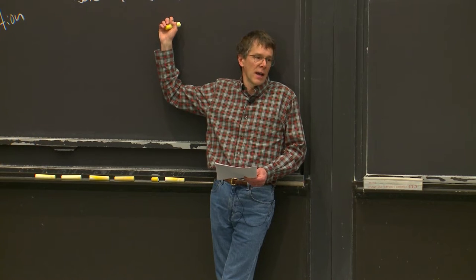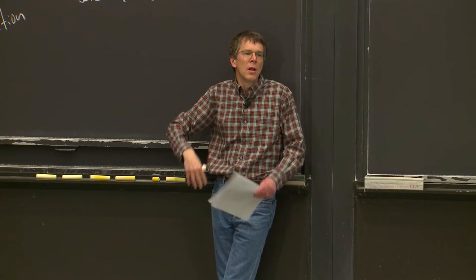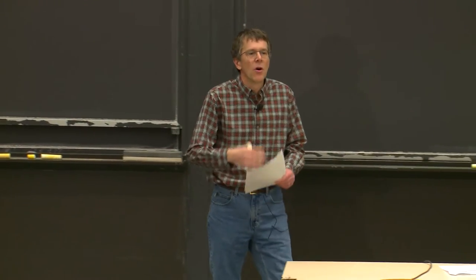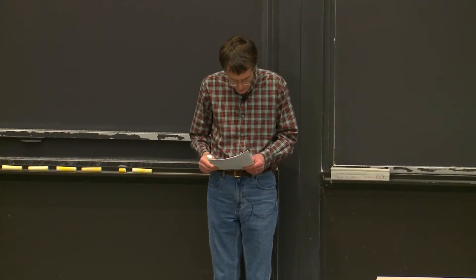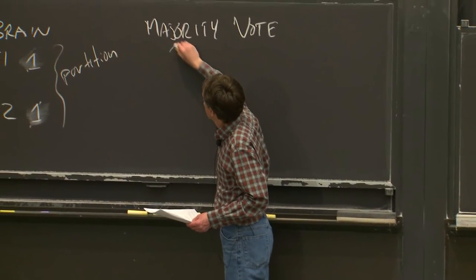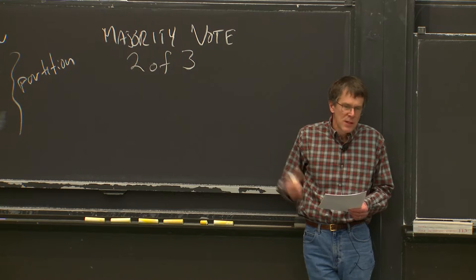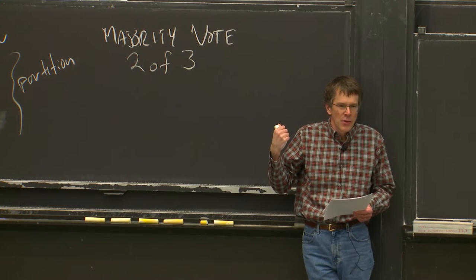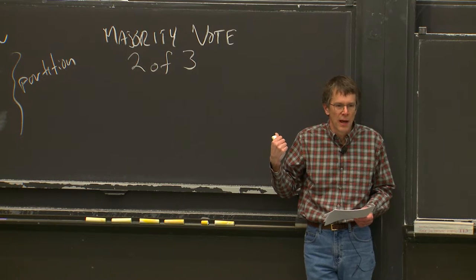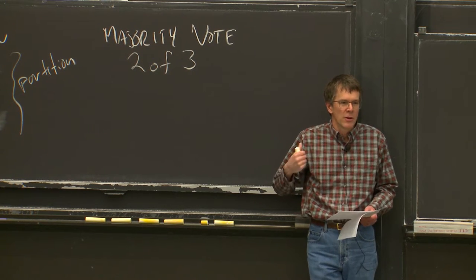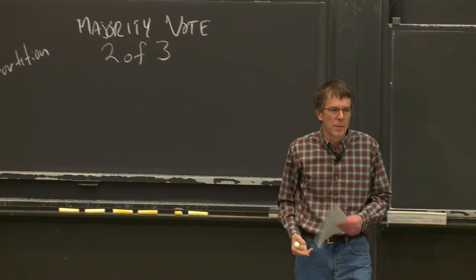Majority voting shows up in almost every other sentence in the Raft paper. The first step is to have an odd number of servers. With two servers the situation is too symmetric — if they run the same software, they do the same thing. With an odd number, a single network split gives two servers on one side and one on the other. The basic idea: to make any progress — elect a leader, commit a log entry — you must assemble a majority, more than half of all servers.